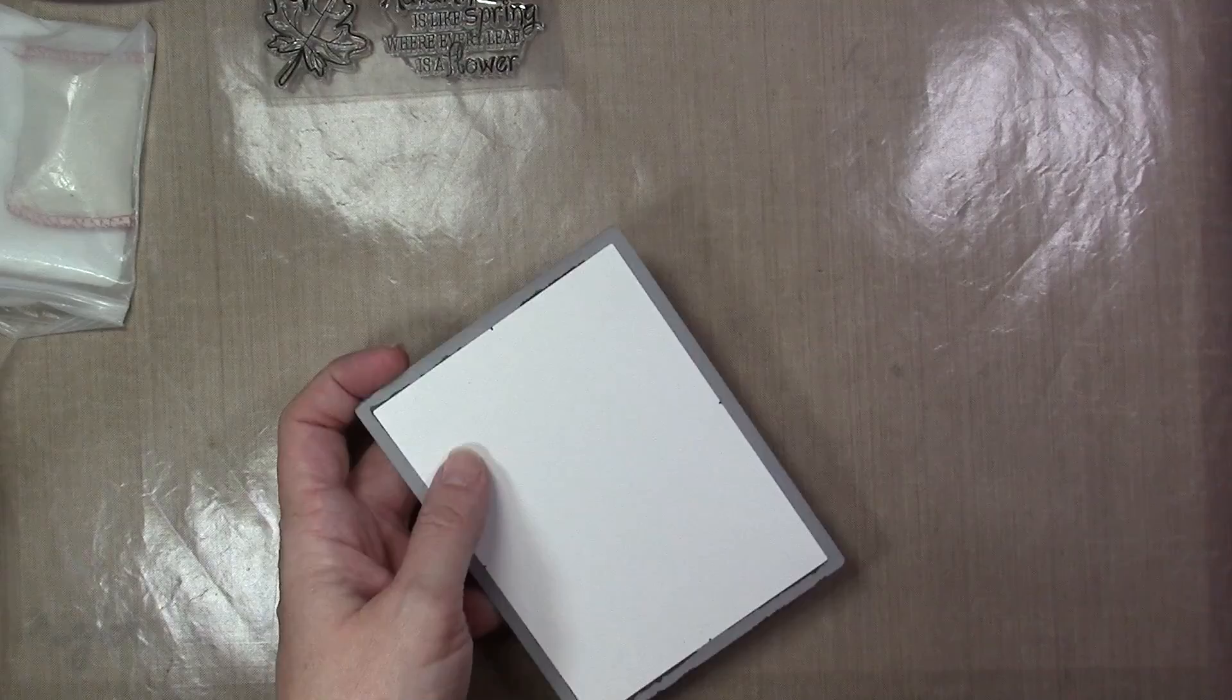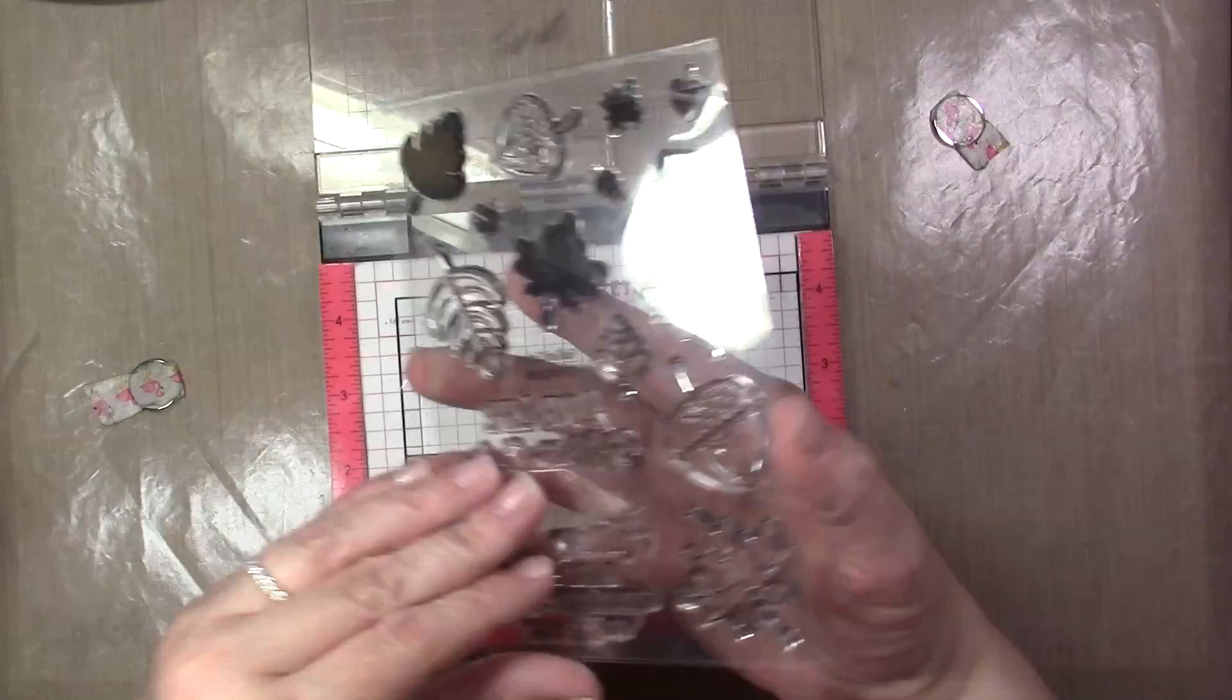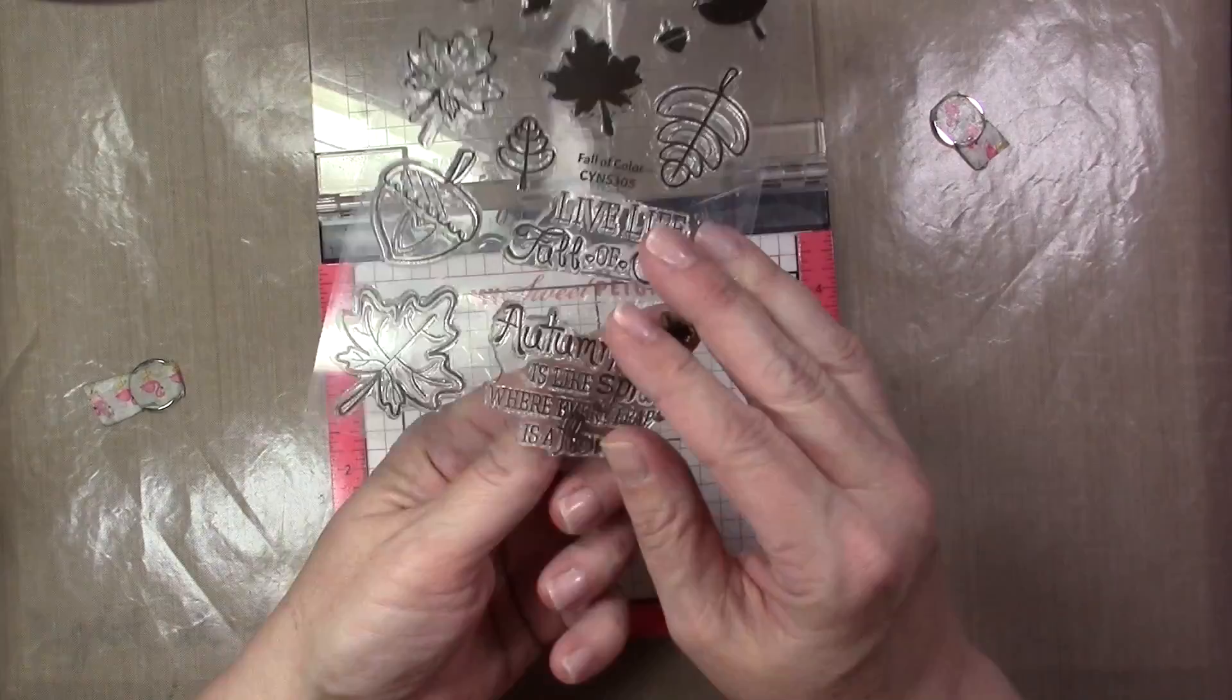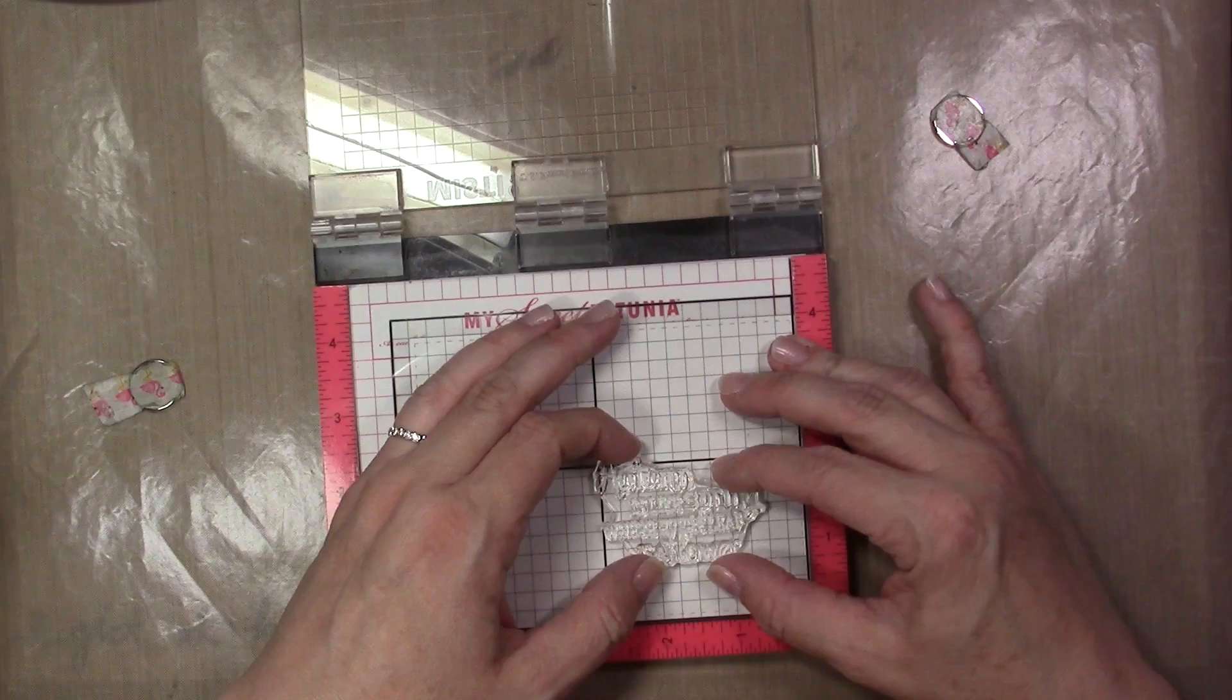I'm going to put the piece of paper into my mini MISTI and I'm going to stamp the sentiment from the Fall of Color stamp set with the Versamark ink. I'm just using a grid here to make sure everything's lined up. You can download this grid for free from the My Sweet Petunia website and get it printed out onto a piece of acetate or transparency.